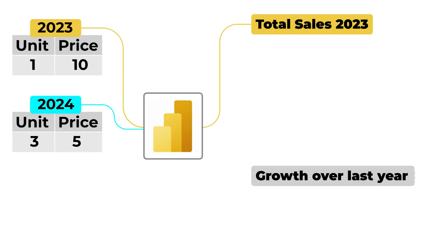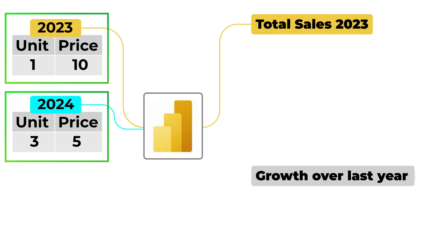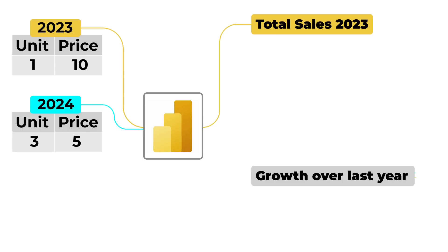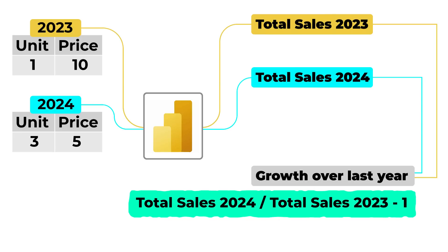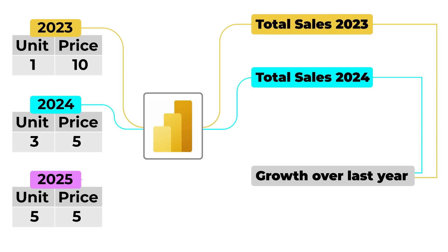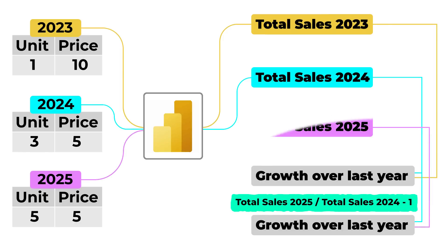Now let's say you're trying to show a calculation for growth over last year — how much you've grown in 2024 compared to 2023. If you loaded two different tables — one for 2023 and a separate one for 2024 — the calculation is going to become complex and not even dynamic. You'd write a calculation for 2023 sales and another for 2024 sales, then compute growth as 2024 divided by 2023 sales minus one. But what happens when 2025 data kicks in? If you continue the pattern of adding another table for 2025, you'll have to create one more growth-over-last-year calculation, and the same story repeats for 2026 and 2027 and so on.